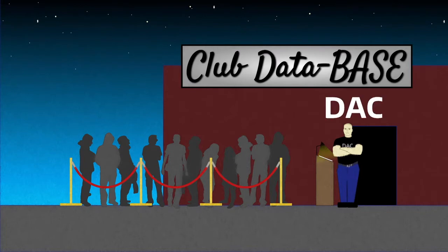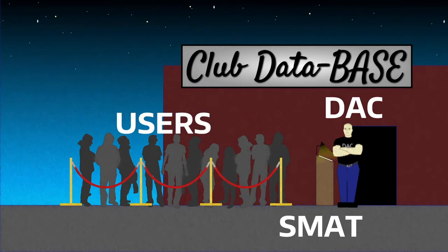Here's an analogy. You can think of DAC as the security person at a nightclub, and SMAT is the list of who can get into the club. The security uses the list to determine who gets in, but it's up to the boss to create the list. Here, the bosses are the UW Data Custodians.